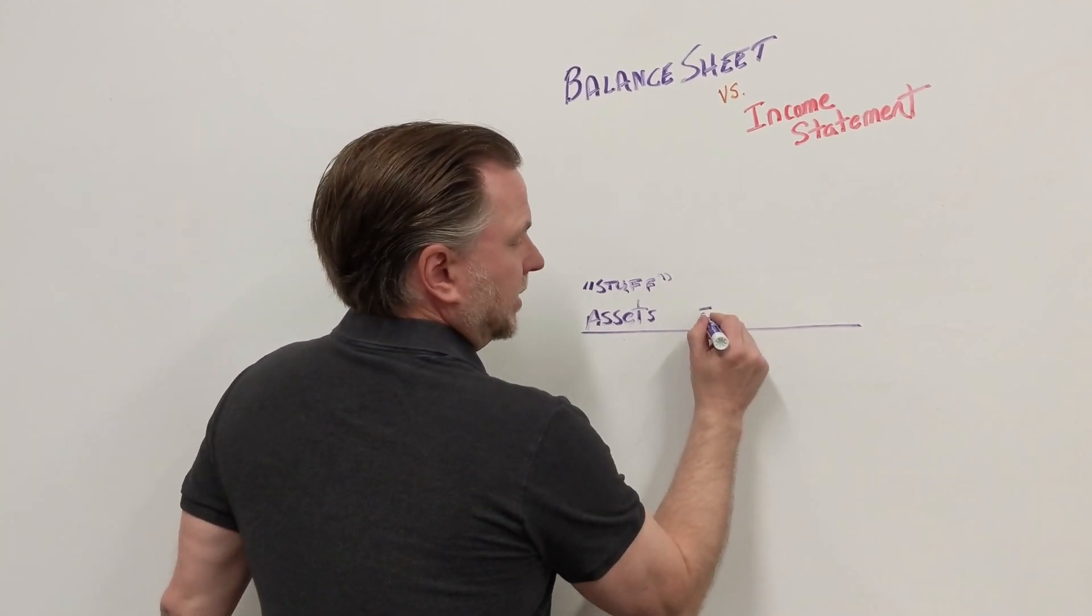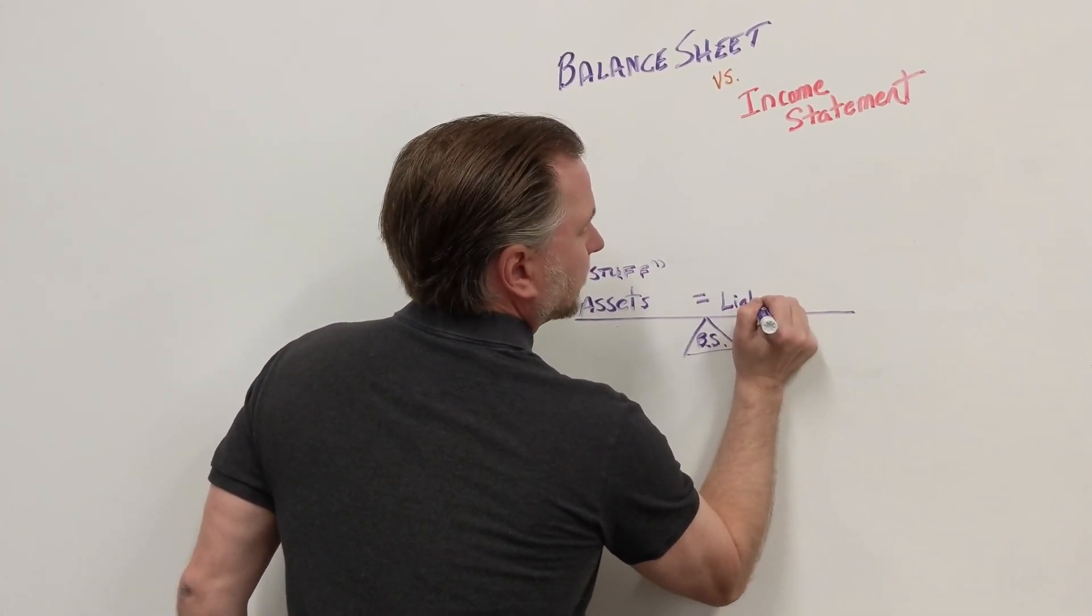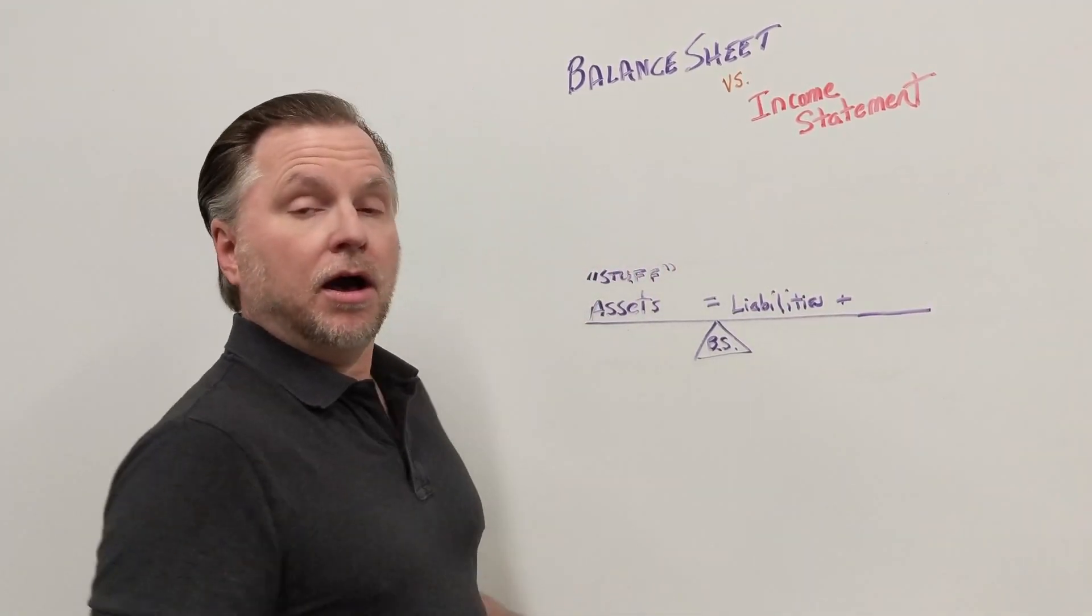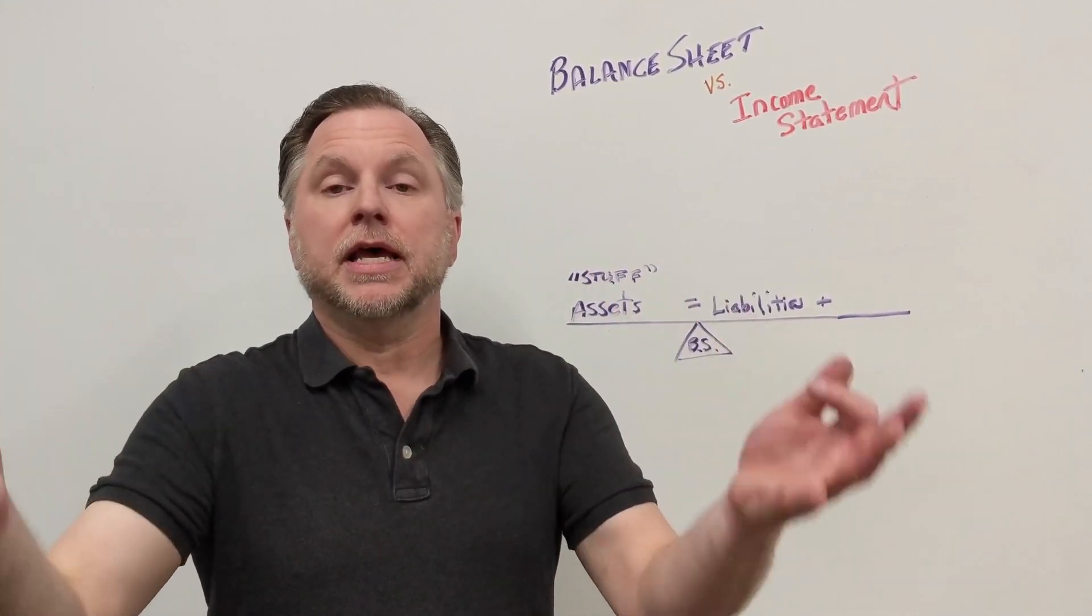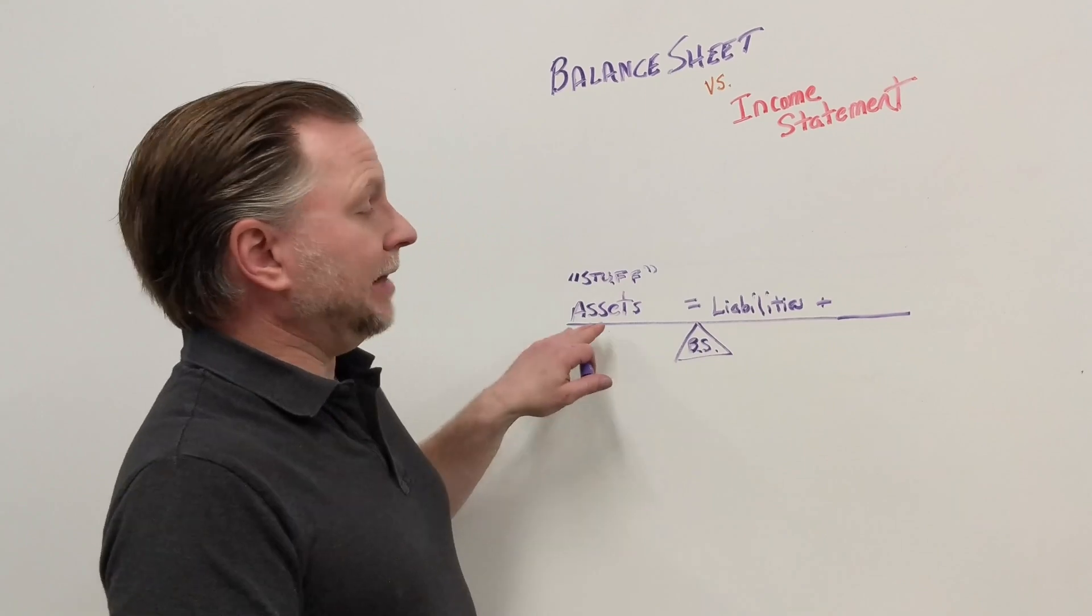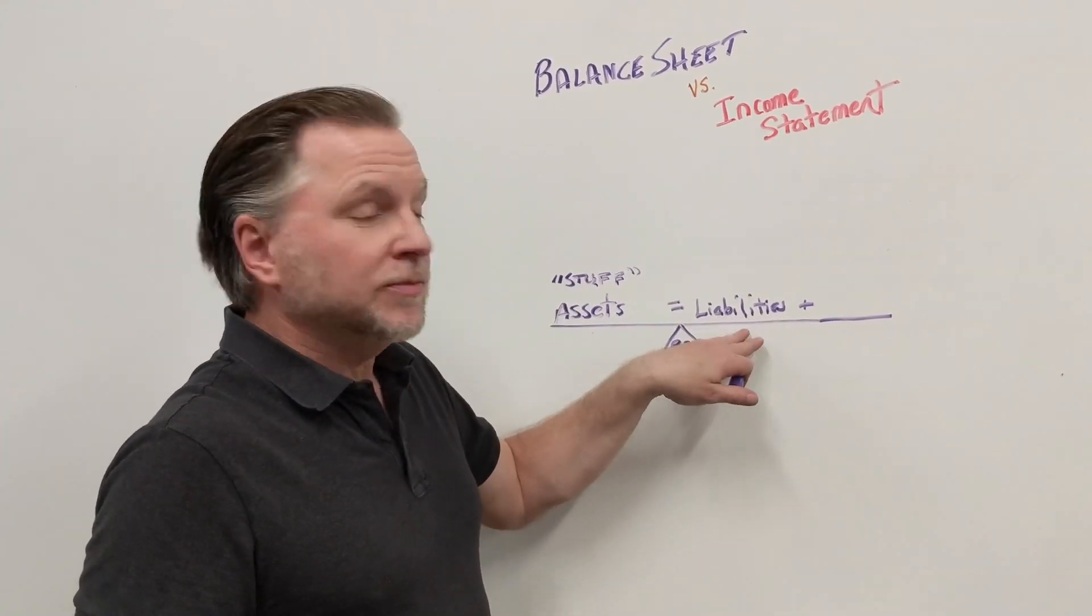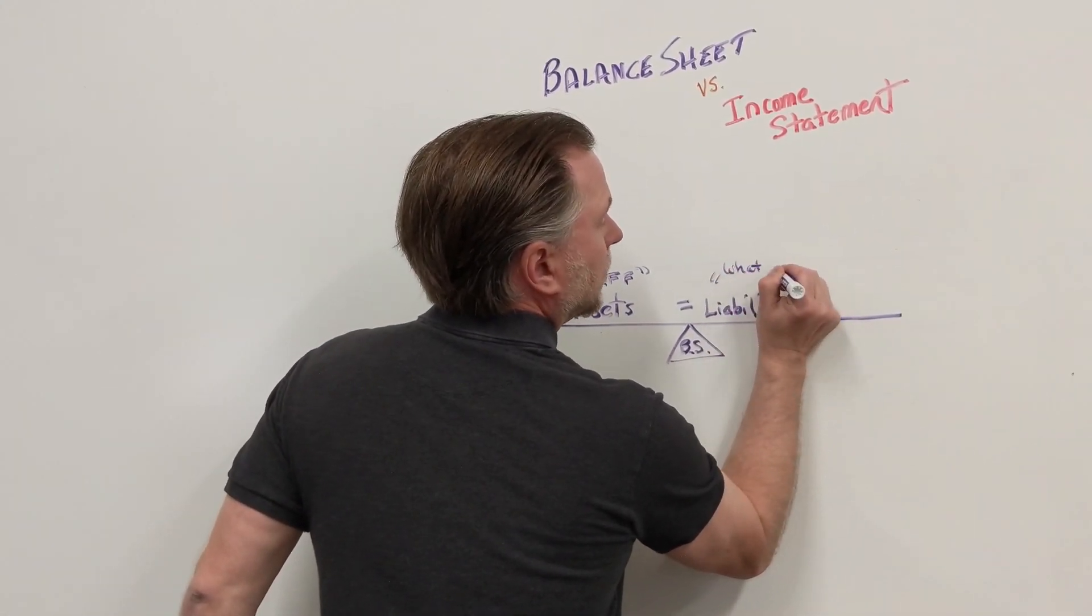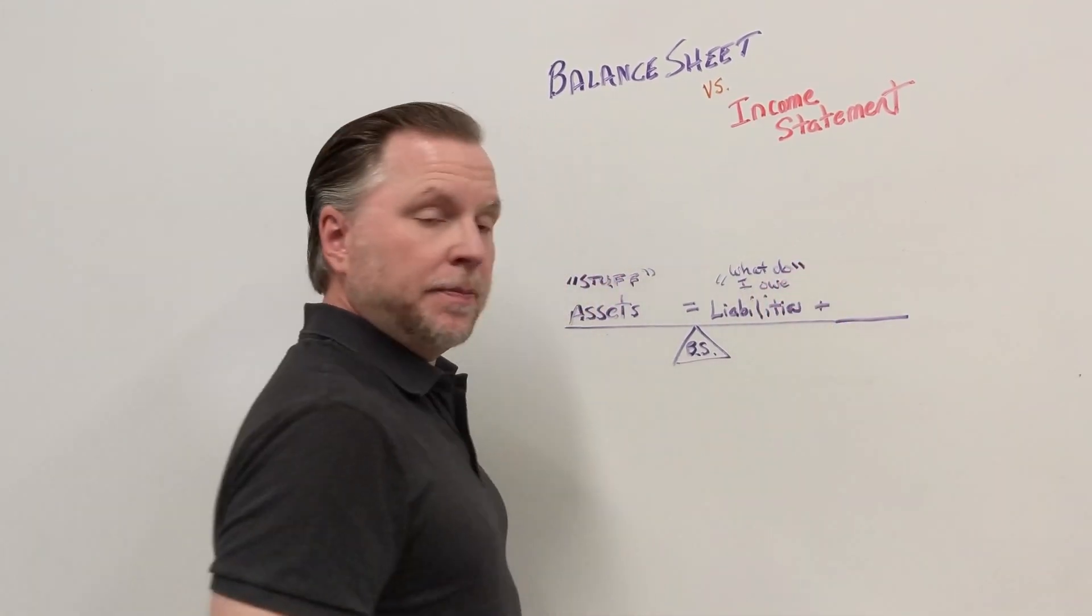Now, it needs to be in balance. So we'll have liabilities. Liabilities are, well, I didn't have the money for it, so I went to the bank. Somebody else allowed me to be able to get that asset. They allowed me to get that asset through some sort of credit. So I owe someone. So it's what do I owe to other people.